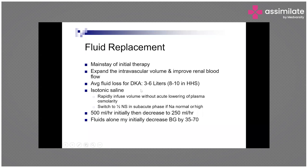The only drawback with Ringer's lactate is the potassium — if the patient has hyperkalemia, it will be a problem. But if the patient's potassium is already low, which is expected in DKA, then Ringer's lactate can also be suitable. Once you know that sugar levels are reducing, your target sugar level reduction should be around 100 milligrams percent per hour — it should not be more than that. If the sugar levels drop by more than 100 milligram percent, you may have to adjust insulin levels.